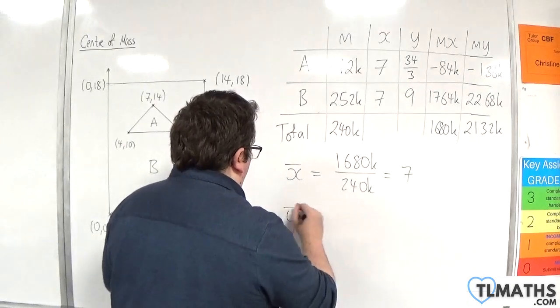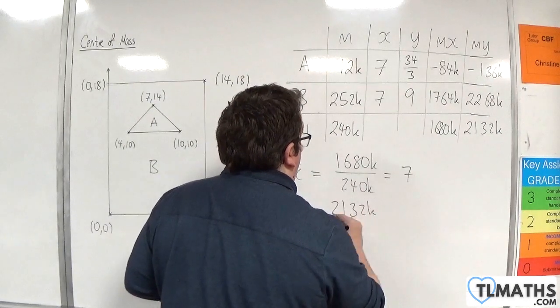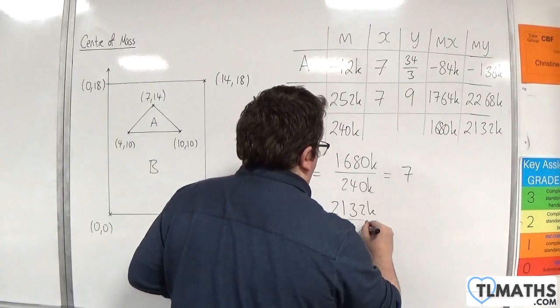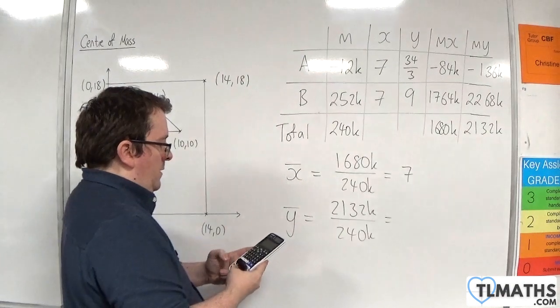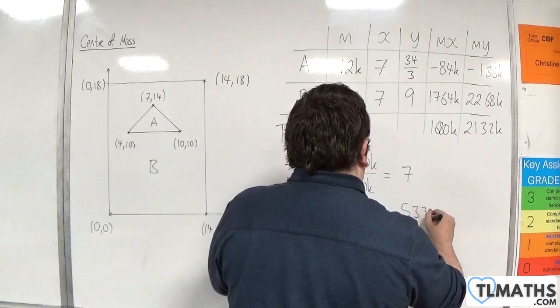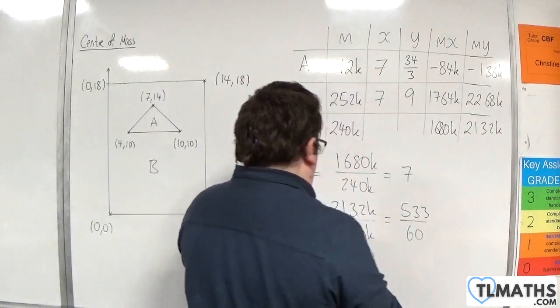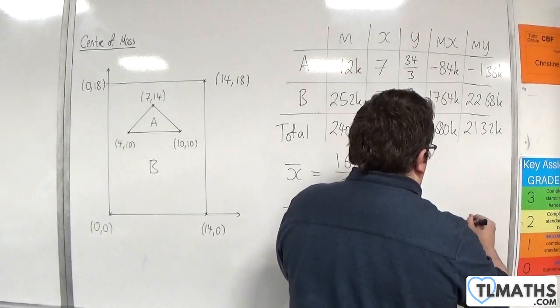And for the y's, 2,132k divided by 240k, we get 533 over 60, which is about 8.9.